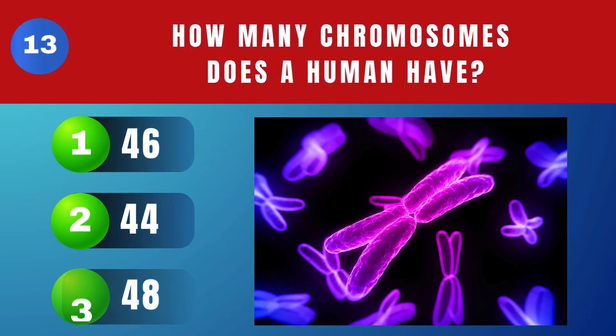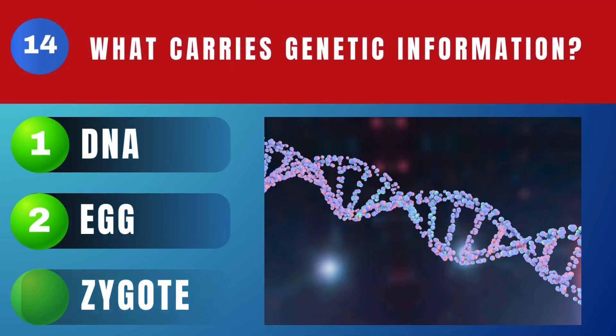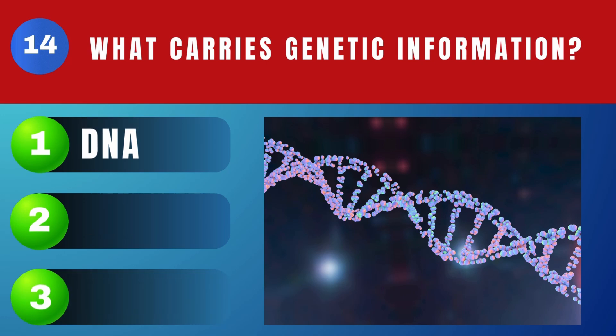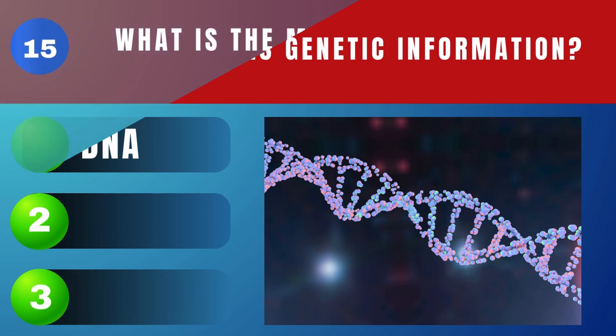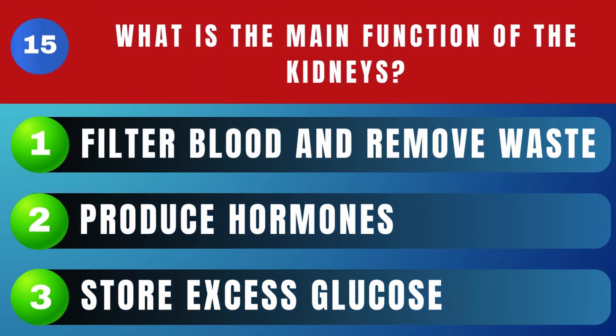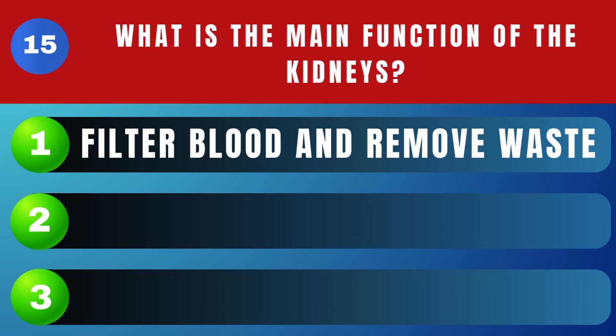How many chromosomes does a human have? 46. What carries genetic information? DNA. What is the main function of the kidneys? Filter blood and remove waste.